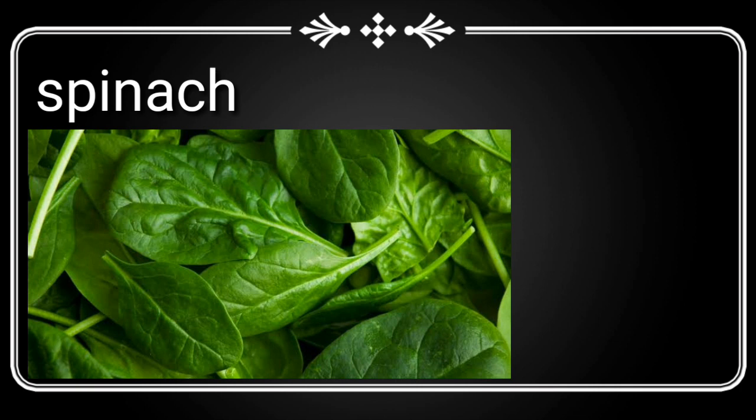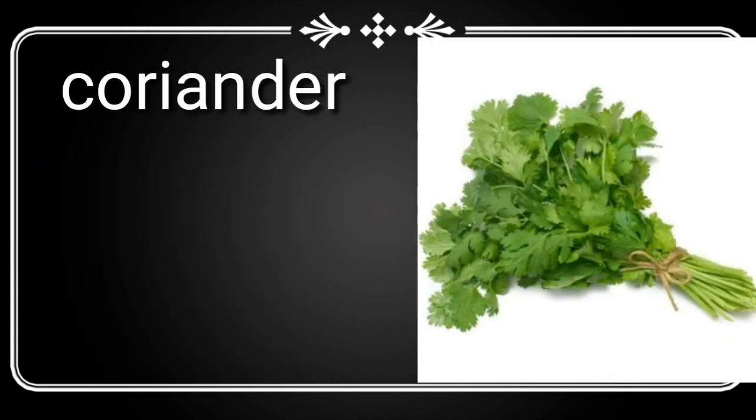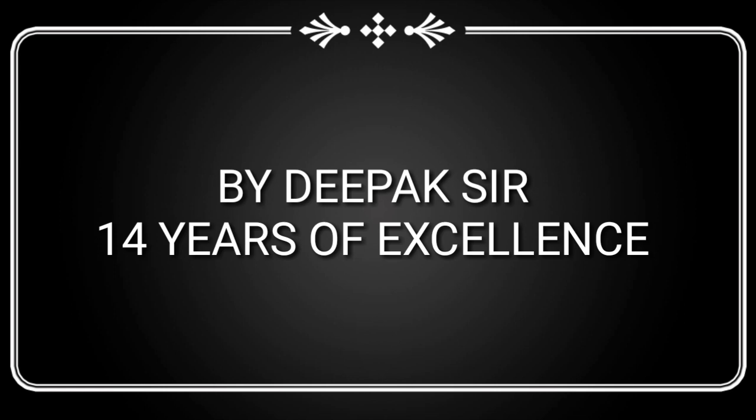Spinach — S-P-I-N-A-C-H. Let me tell you the real pronunciation: it is 'spinach', not 'spinach' — spinach means palak. Gooseberry — cornda. Mint — pudina. Coriander — dhania. And the last word: chili — which is mirch.